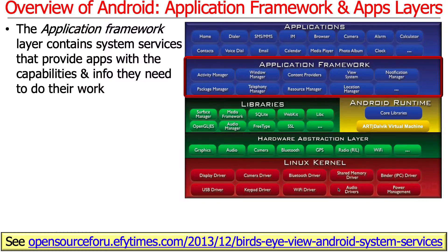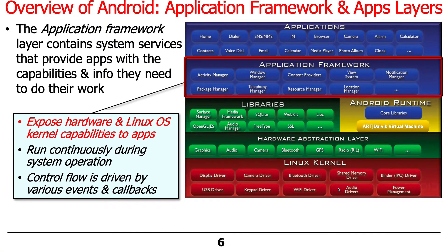As you can see here, some of the services expose hardware and Linux OS kernel capabilities up to apps. A good example would be the Telephony Manager, which gives you the services provided by the underlying radio interface on the system — the cellular interface. These services in the App Framework layer run continuously, from the point when the system boots to when it either crashes, which doesn't happen very much, or you reboot it every week or so.